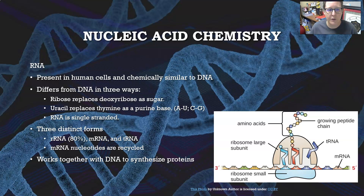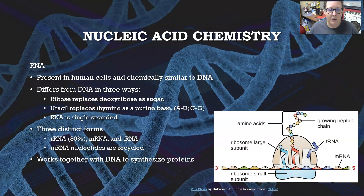RNA is present in human cells and is chemically similar to DNA. It differs from DNA in three ways: ribose replaces deoxyribose as the sugar — that's the R in RNA versus the D in DNA; uracil replaces thymine, so you have pairing of A to U and C to G; and RNA is single stranded. There are three distinct forms of RNA: ribosomal RNA, which is 80% of the RNA in your cell, messenger RNA, and transfer RNA. Messenger RNA and nucleotides are recycled and reused, and RNA works together with DNA to synthesize protein.